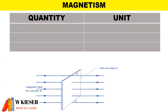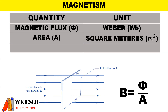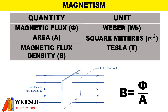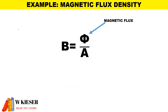For our first formula for magnetism, B is equal to the flux divided by the area. The units for magnetic flux is Weber, the units for area is metres squared, and the units for B — magnetic flux density — is Tesla.